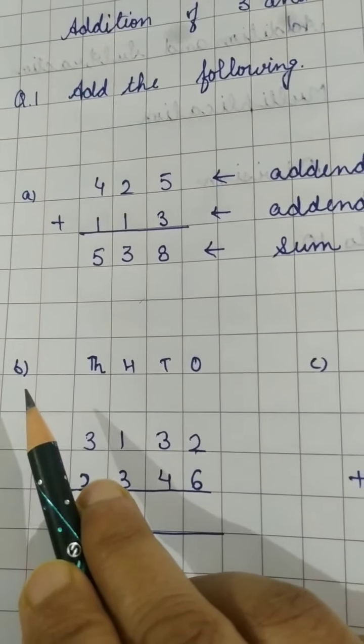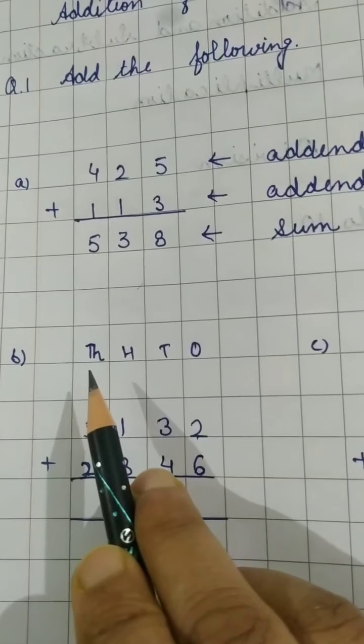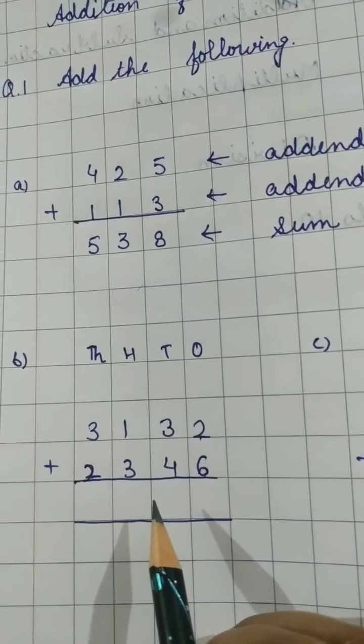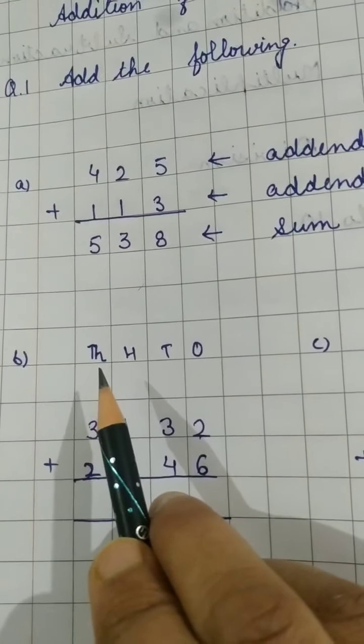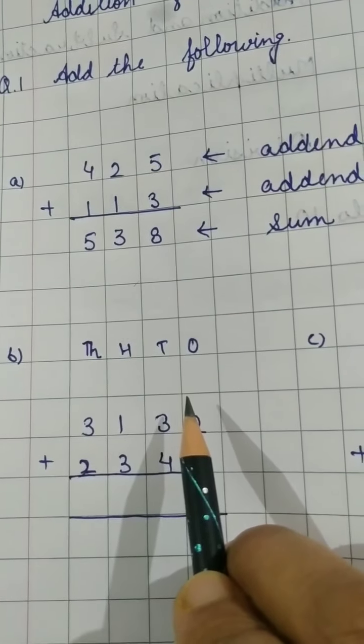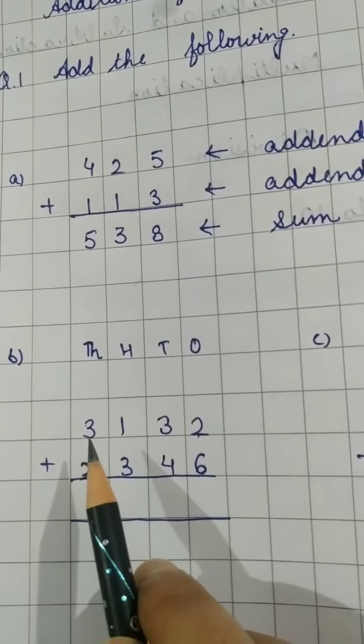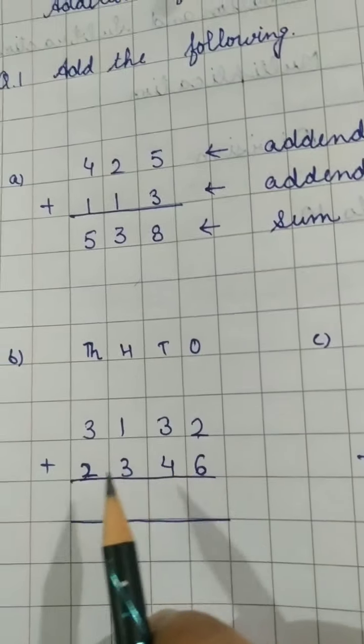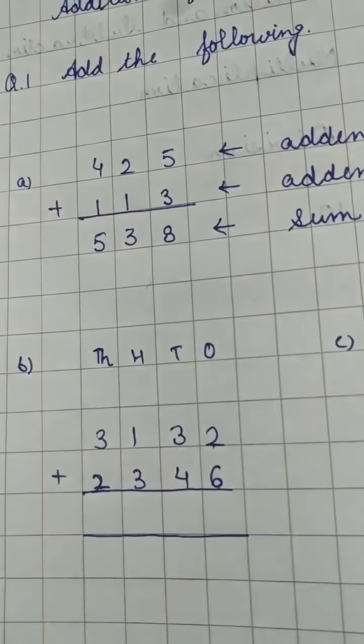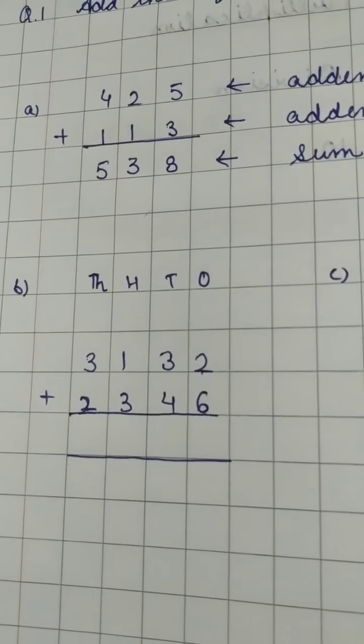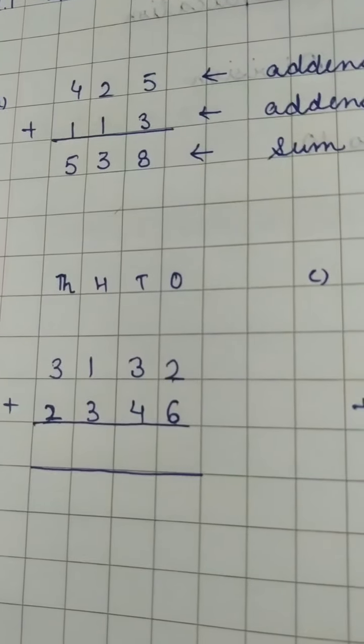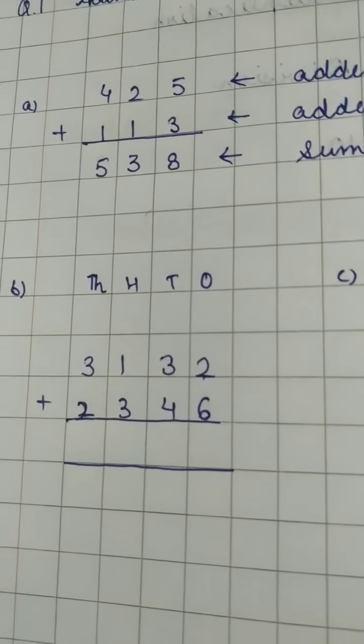Now let us see B part. Here I have written the place values also of all the digits. Here the example is of 4 digits now. Ones, tens, hundreds, thousands you have to write. Then leave this line for writing the carries. The first quantity is 3132 and the second one is 2346. We have to add this.